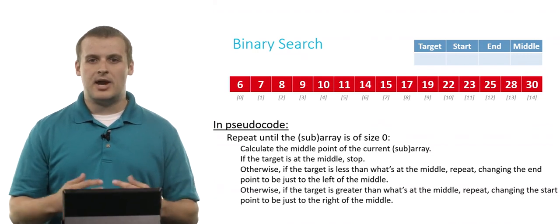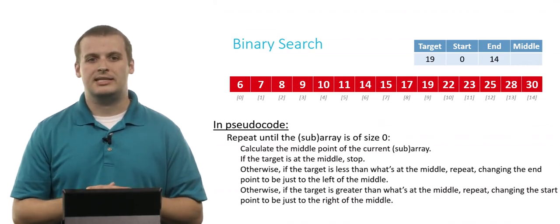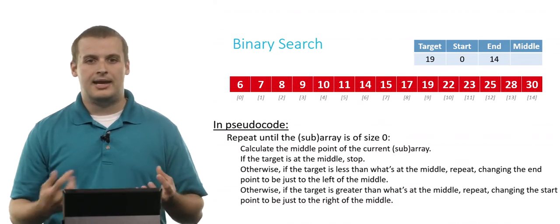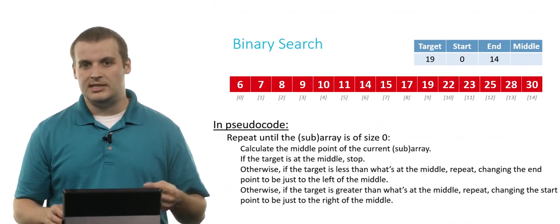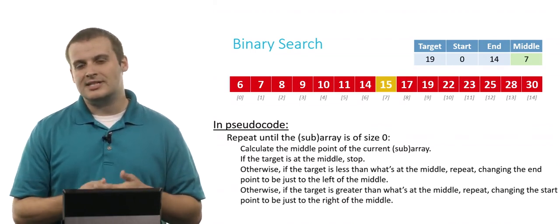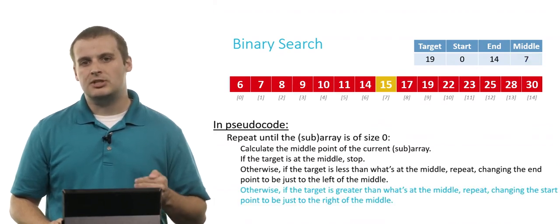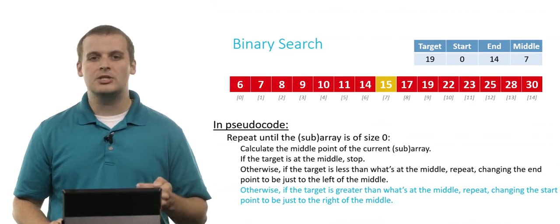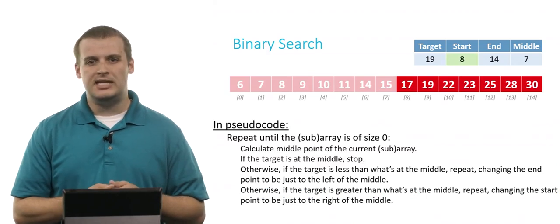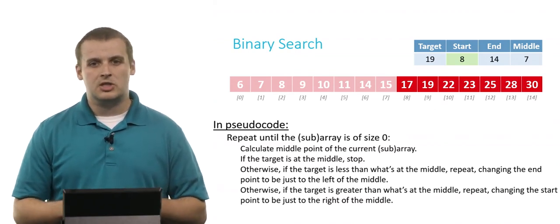Let's repeat the process step by step. We're looking for the value 19. The first element is at index 0 and the last is at index 14 — those are our start and end. We calculate the midpoint: 0 plus 14 divided by 2 equals 7. Is 15 what we're looking for? No — we're looking for 19, and 19 is greater than 15. So we change the start point to be just to the right of the midpoint: the new start is array location 8. We've effectively eliminated half the problem — instead of 15 elements, we only search over 7.